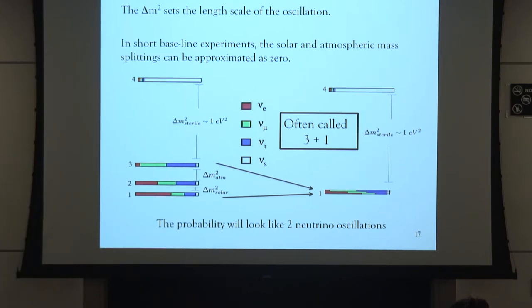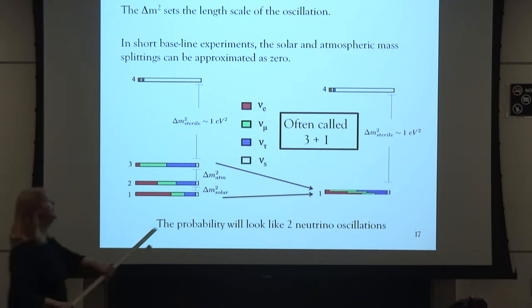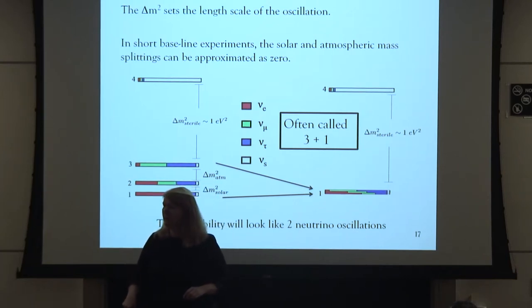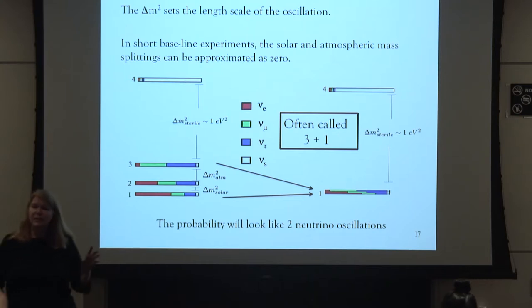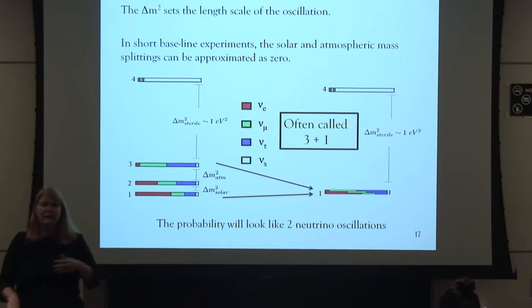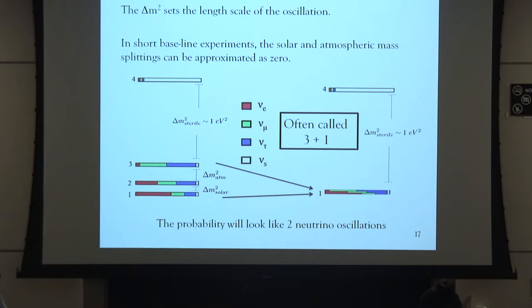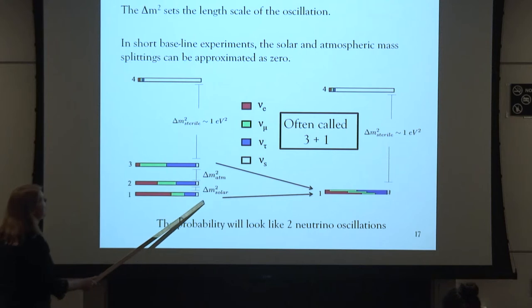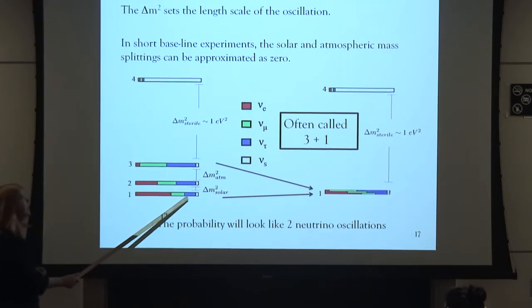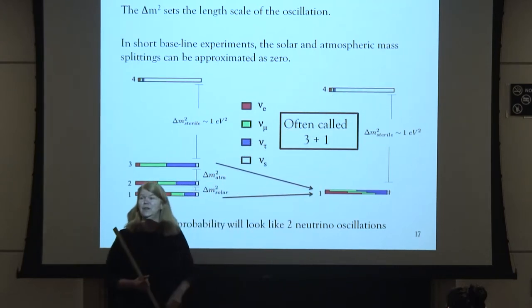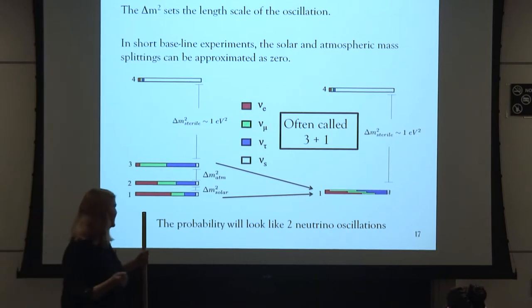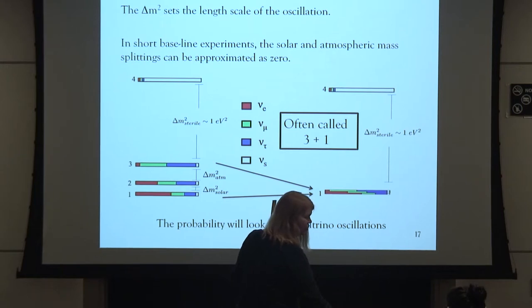The delta M squared sets the length of the oscillation. If delta M squared is very large and we want delta M squared times L over E to be on the order of 1, then you want L over E of about 1. For most energy beams in the 100 MeV to few GeV range, you're talking about lengths that are pretty short on the scale of other neutrino oscillation experiments — that's why we call them short baseline. In the short baseline approximation, the contributions from the small delta M squareds are negligible — it reduces to two-neutrino oscillations.